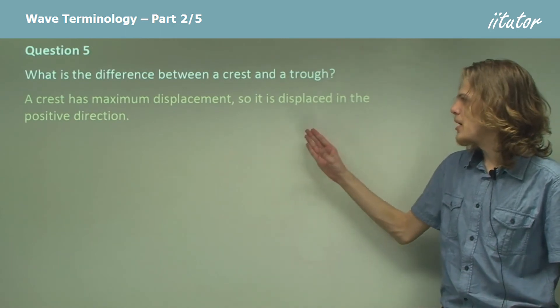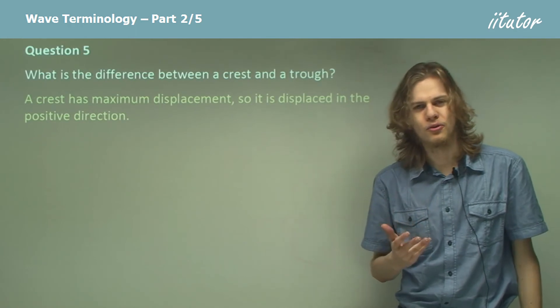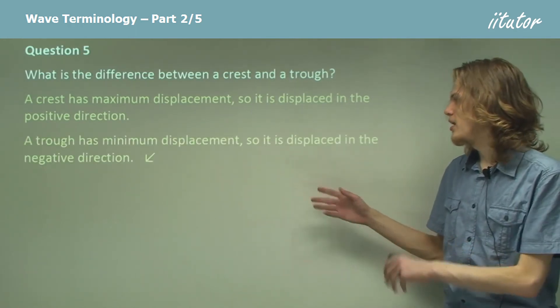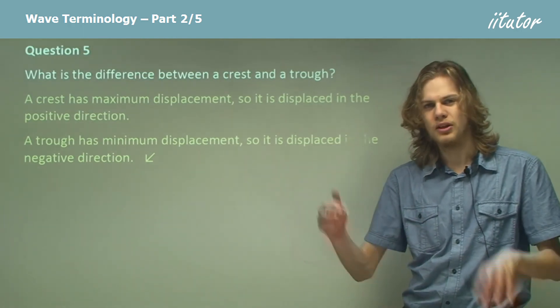The crest has the maximum displacement so it's displaced in the positive direction, which is normally up on a graph. A trough on the other hand has minimum displacement so it's displaced in the negative direction. That's down on the graph.